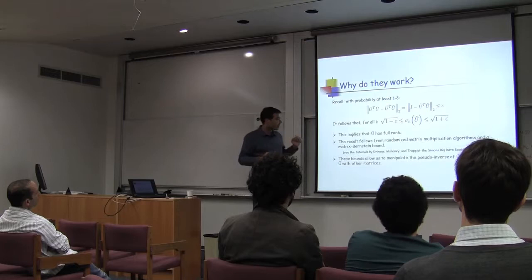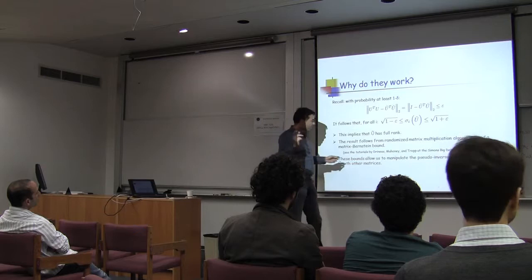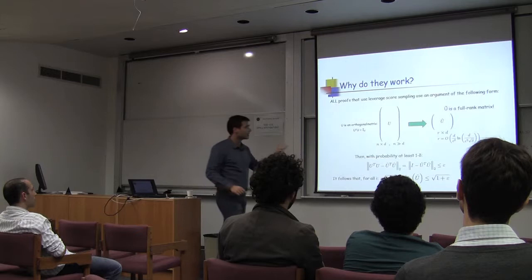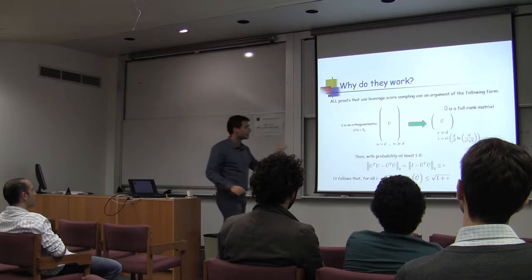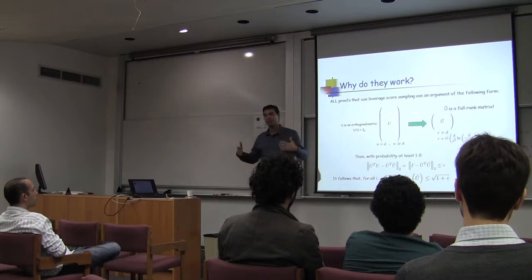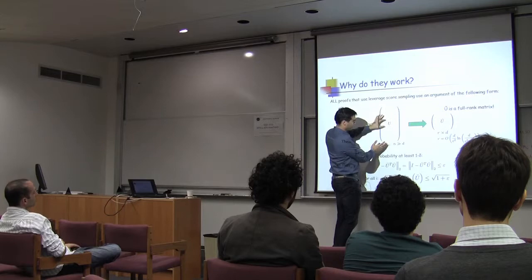There was a big data program last year at the Simons Foundation where Michael, myself, and Joel Tropp gave tutorials, which are available online. The advantage of showing that U-tilde is approximately orthogonal is that you can manipulate it fairly easily in downstream applications: the pseudo-inverse is well behaved, the condition number is bounded, and so on. The heart of the proof is that carefully randomly subsampling U gives an approximately orthogonal matrix U-tilde.